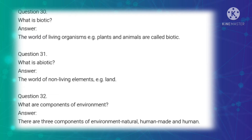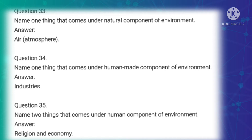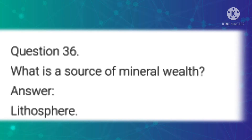Thirtieth question: What is biotic? Answer: The world of living organisms — example plants and animals — are called biotic. Thirty-first question: What is abiotic? Answer: The world of non-living elements, example land. Thirty-second question: What are the components of environment? Answer: There are three components of environment — natural, human-made and human environment. Thirty-third question: Name one thing under natural component — air, known as atmosphere. Thirty-fourth question: Name one thing under human-made component — industries. Thirty-fifth question: Name two things under human component — religion and economy. Thirty-sixth question: What is the source of mineral wealth? Answer: Lithosphere.